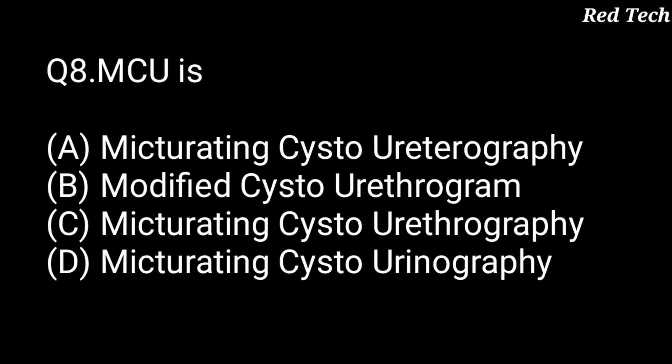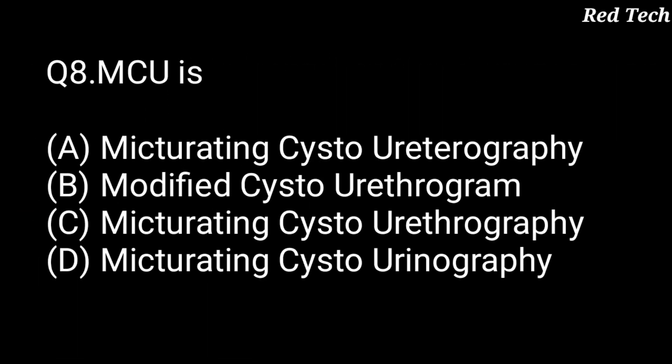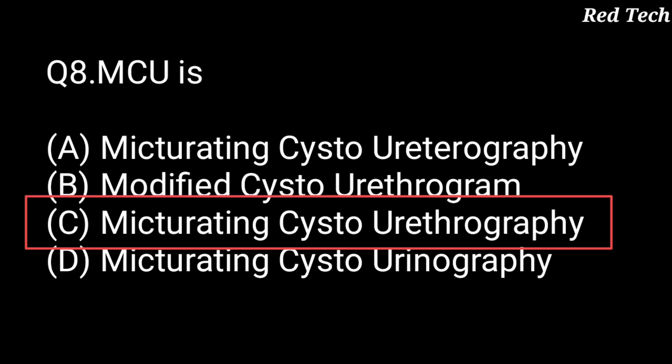Question number 8: MCU is — option A is micturating system ureterography, option B is modified system ureterogram, option C is micturating cystourethrography, and option D is micturating system ureterography. The right answer is option C, micturating cystourethrography.